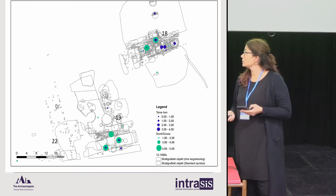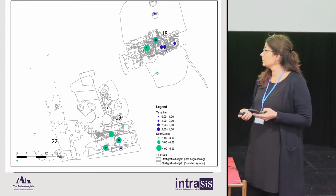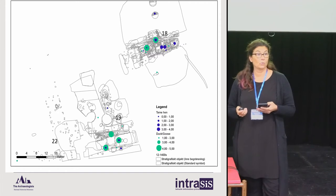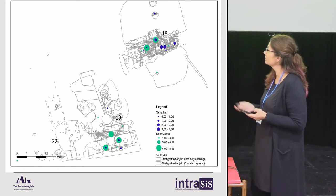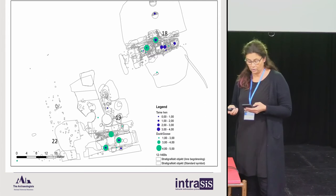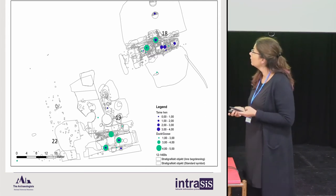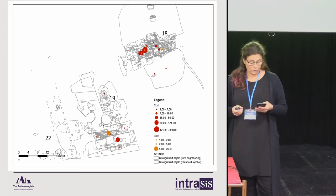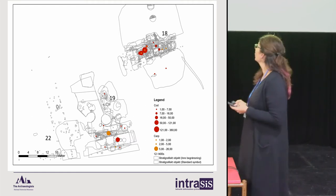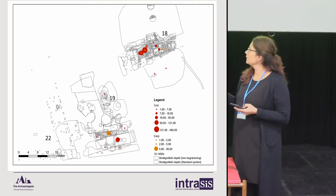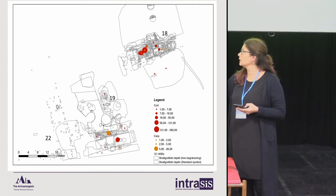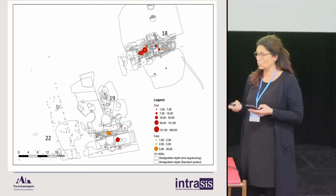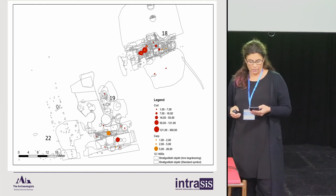This is just something I did yesterday: I wanted to see if there were more tame hen in one house or farm than another. The blue dots are duck and goose and the green are tame hen. This is something that will actually get into the report. Ollie saw that there was a lot more cod in farm 18 than in farm 19, and also that there were more carp fish in farm 19.